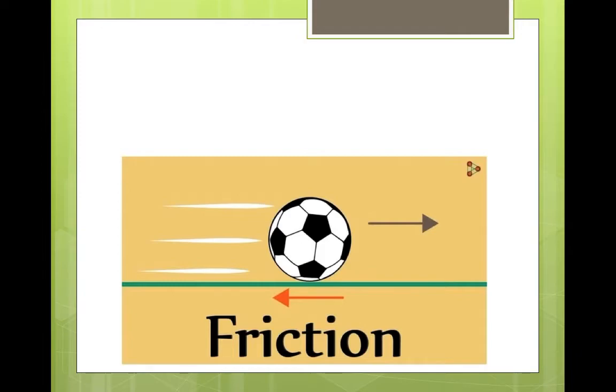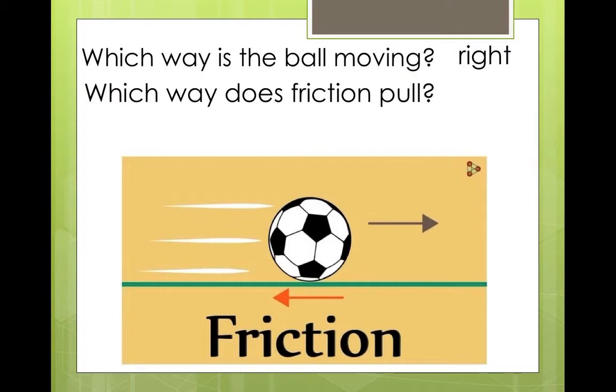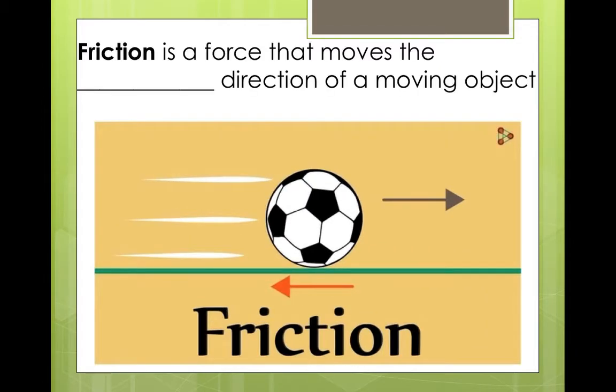Let's look. First review. Which way is the ball moving? The ball is moving right. But, which way does friction pull? The opposite direction is left. Friction is a force that moves the opposite direction of a moving object. The same direction? No. We say opposite. Opposite.